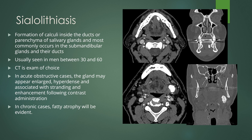Sialolithiasis is formation of calculi inside the ducts or parenchyma of the salivary glands, most common in the submandibular glands and their ducts. It is usually seen in men in the middle age range between 30 and 60. CT is the exam of choice, and you do not necessarily need contrast, though contrast can show inflammation of the gland if there is obstruction from a stone. The gland can appear enlarged, hyperdense, with stranding and enhancement. In chronic cases, you get fatty atrophy of the gland. Here is a large stone within the left submandibular gland, and another stone in the left anterior floor of mouth — sometimes better seen on bone-windowed images, especially if patients have dental hardware.